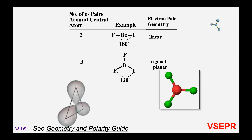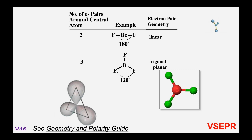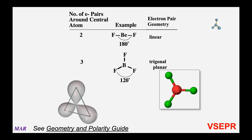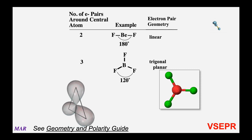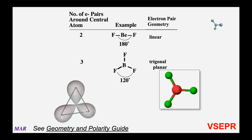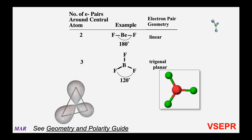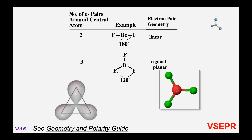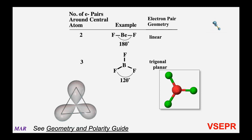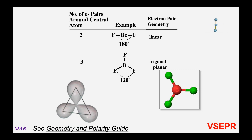If you have three outside atoms around a central atom — as an example, boron trifluoride — those three F atoms are going to try to be as far apart from each other as they can. Each of those BF single bonds is like an electron cloud, and the clouds want to be as far apart from other clouds as possible. To evenly distribute the clouds, you put them in what's called a trigonal planar geometry, meaning each FBF angle is 120 degrees.